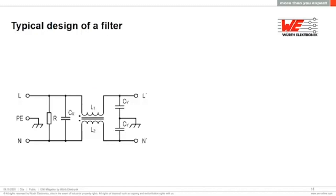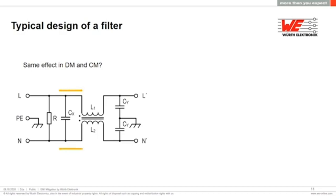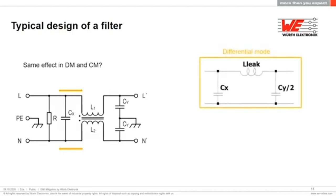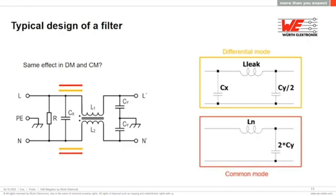A typical EMI filter design includes X caps, Y caps, a common mode choke, and a bleed resistor of high value such as in the megaohm range. For differential mode noise, the current flows in opposite directions, so the equivalent circuit differs from that of common mode. For common mode, the noise flows in the same direction and returns to earth, giving a different equivalent circuit.